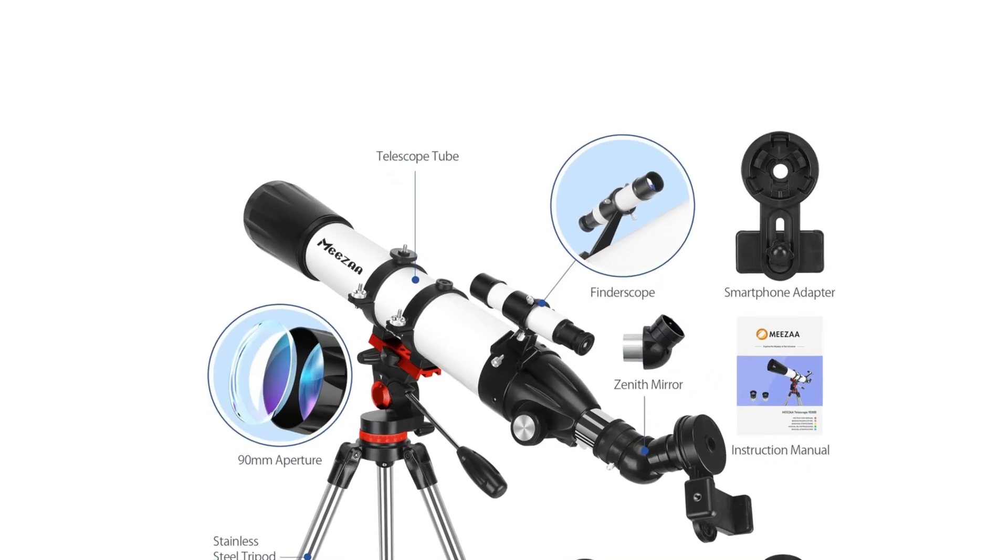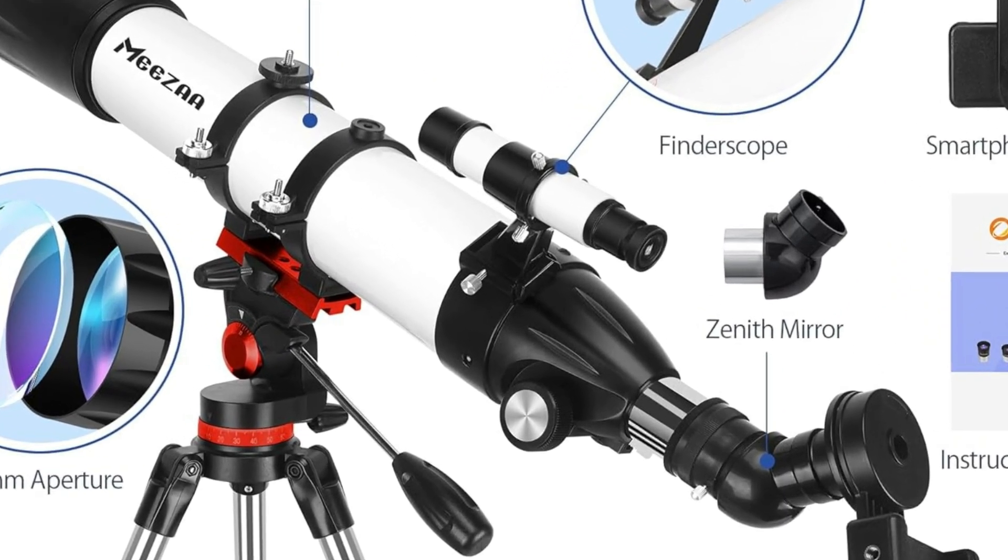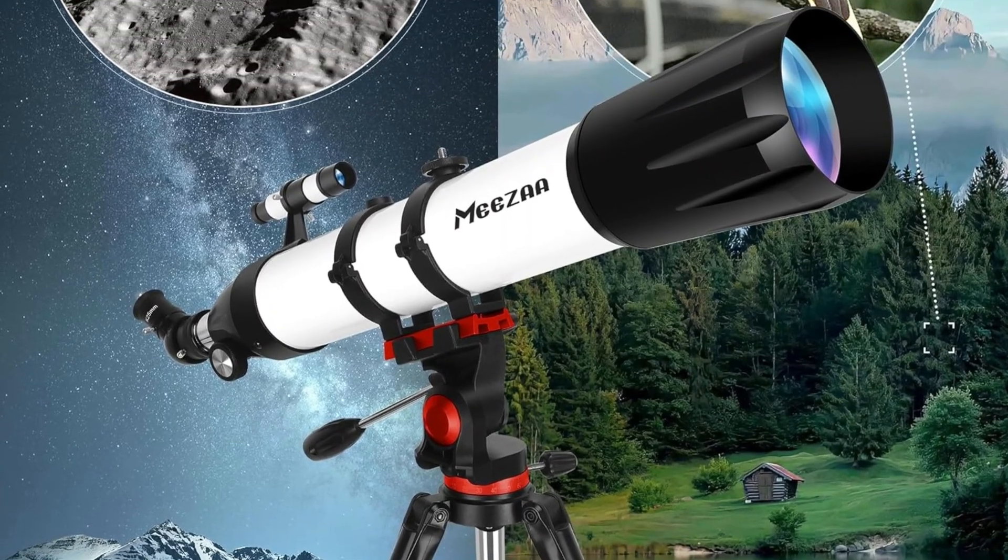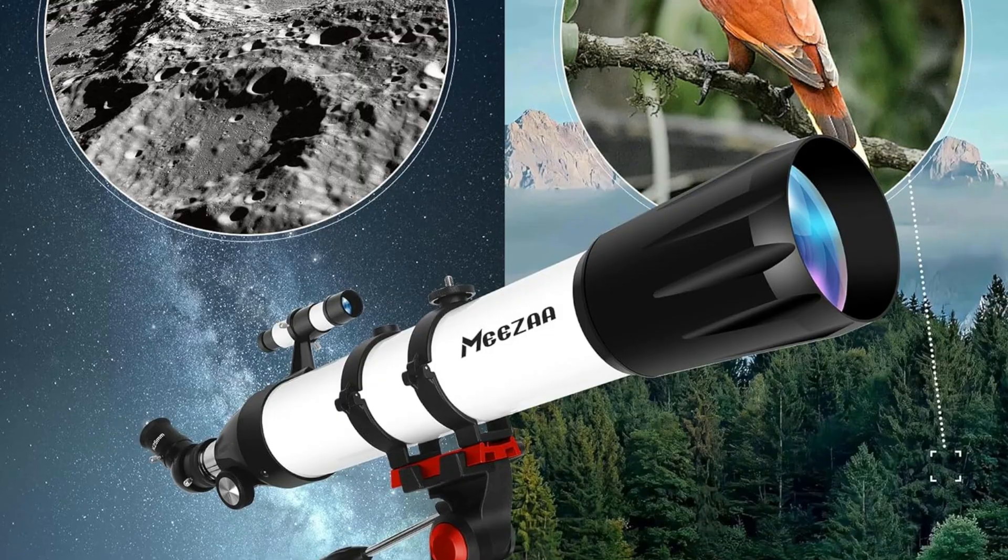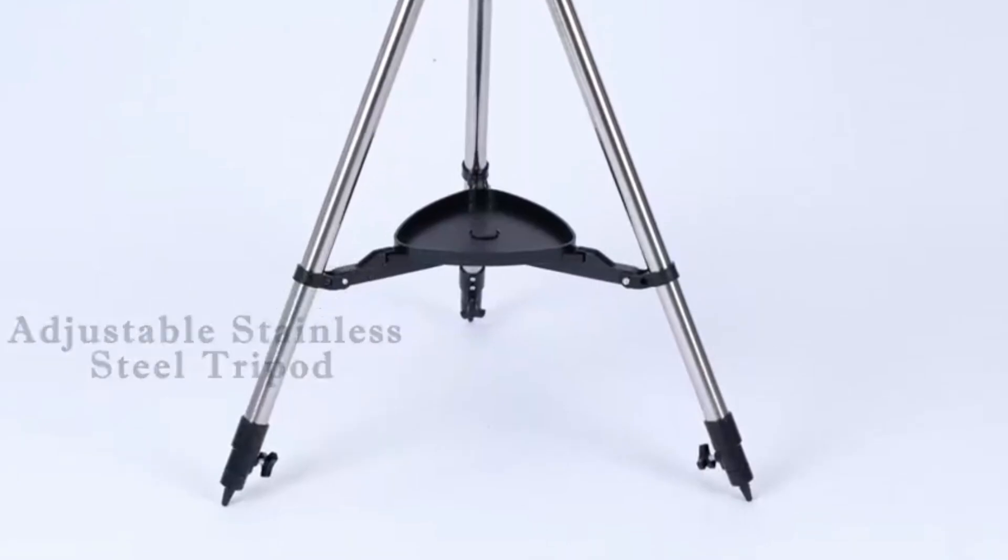90mm Large Aperture, the Astronomy Telescope has an 800mm f/8.88 focal length and 90mm aperture. The 90mm aperture captures more light pictures, fully multi-coated optical glass lenses with high transmission coating improve image brightness and clarity.